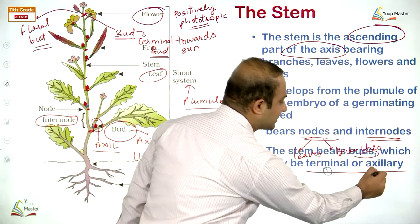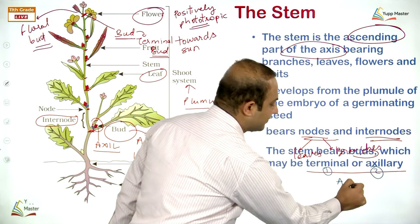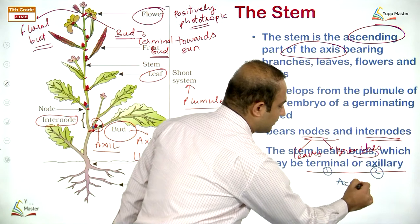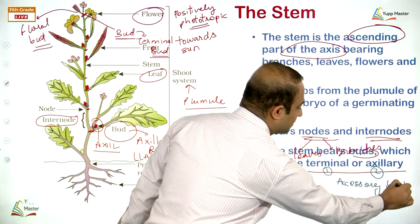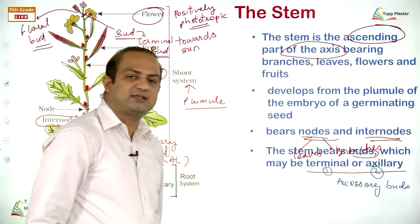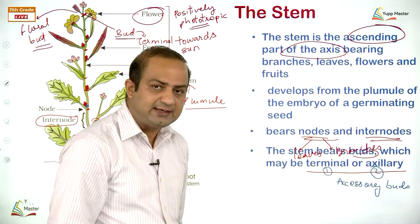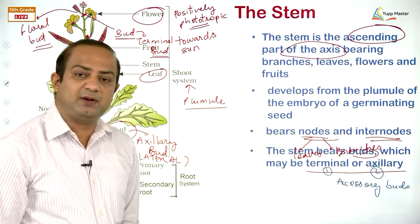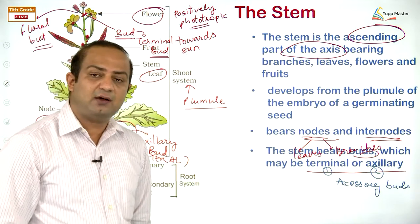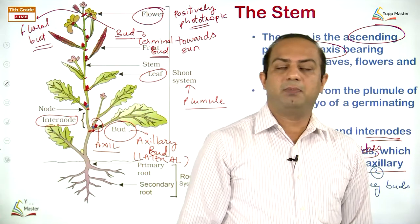If any bud is present at some place other than the stem, it is named an adventitious bud. A bud is nothing but a young undeveloped shoot, also called a compact stem. On the basis of position: at the apex it is apical bud (also called terminal bud), and in the axil of the leaf it is axillary bud (also called lateral bud).